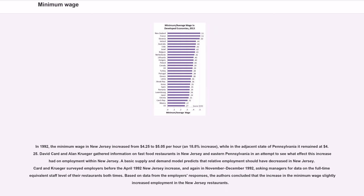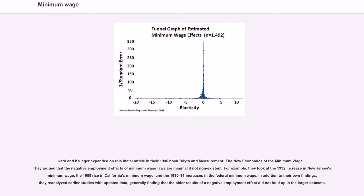In 1992, the minimum wage in New Jersey increased from $4.25 to $5.05 per hour — an 18.8% increase — while in the adjacent state of Pennsylvania it remained at $4.25. David Card and Alan Kruger gathered information on fast food restaurants in New Jersey and eastern Pennsylvania to see what effect this increase had on employment within New Jersey. A basic supply and demand model predicts that relative employment should have decreased in New Jersey. Based on data from employer responses, the authors concluded that the increase in the minimum wage slightly increased employment in the New Jersey restaurants. Card and Kruger expanded on this in their 1995 book Myth and Measurement: The New Economics of the Minimum Wage, arguing that the negative employment effects of minimum wage laws are minimal if not non-existent.